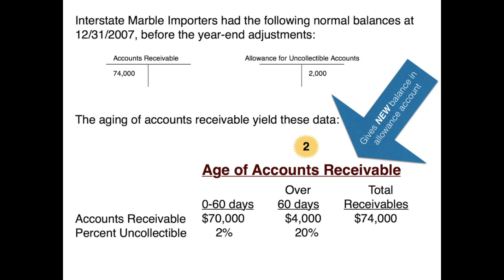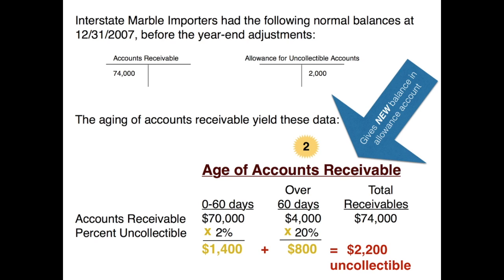Let's multiply through to figure out what amounts of these accounts receivable we don't plan to collect. In the zero to 60 day range we don't plan to collect about $1,400, and in the over-60-days range we don't expect to collect $800. So out of our $74,000 in receivables, we don't expect to collect $2,200. This $2,200 is our new balance in the allowance account — no longer $2,000 as shown in the T-account; the new balance is $2,200.